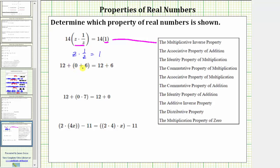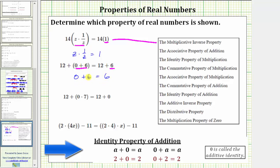Next, we have 12 plus the quantity zero plus six equals 12 plus six. Notice in this equation, the zero plus six on the left has been simplified to six on the right. We need to focus on the property shown by zero plus six equals six. Whenever we have a sum involving zero, we are using the identity property of addition, which is given here.